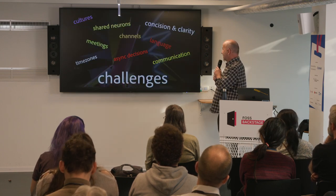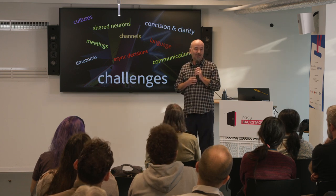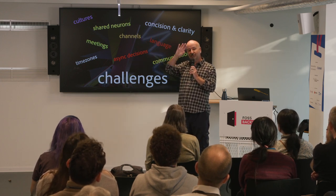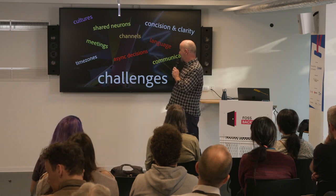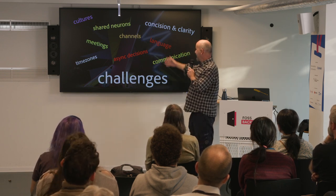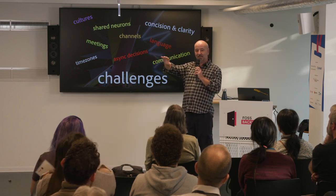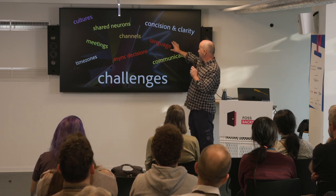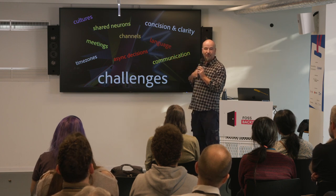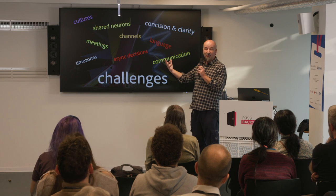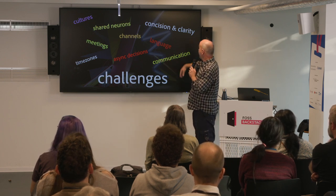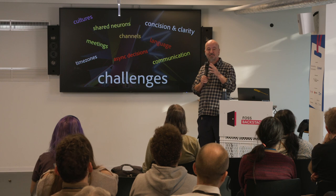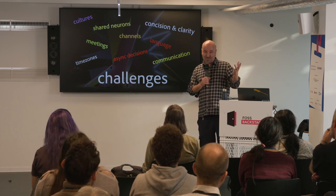There are many challenges to working in distributed teams. Cultures get in the way. What I call shared neurons — how do you put your neurons together to make things happen? Meetings can be a drag. Time zones are difficult. Channels — you communicate on Slack, mailing lists, Jira, whatever. Asynchronous decisions are super important. Language can be a problem if English isn't your mother tongue. Communication concision and clarity are critical. These are the challenges we'll explore with suggestions on how to improve things.